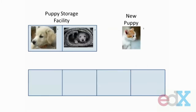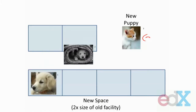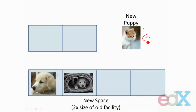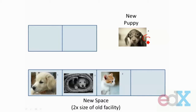For example, when Tim gets a new — well, let's just call it an honorary puppy. When he sees that there's no space to store the new honorary puppy, he sells the old facility and buys a new one that's twice the size of the old facility. Then he moves each puppy from the old space into the new space, and finally adds the new puppy into a space as well. Now he has extra space, so when he gets a new puppy, he doesn't have to do all of that over again — he can just add the new puppy into the new space.